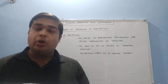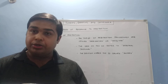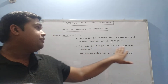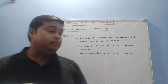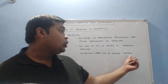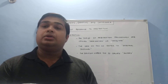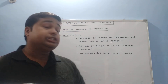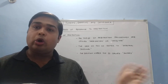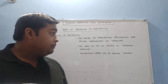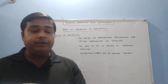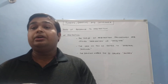Under arbitration, the case is referred to an arbitral tribunal. The decision under arbitration is called an award. In normal courts the decision is called a judgment or decree, whereas under arbitration it is called an award.